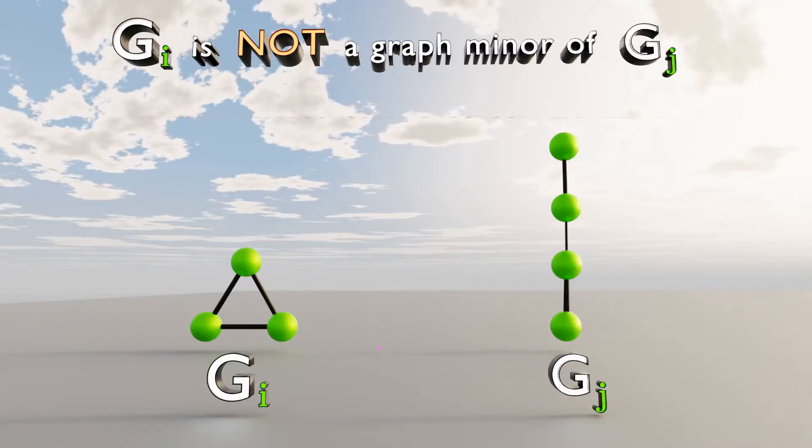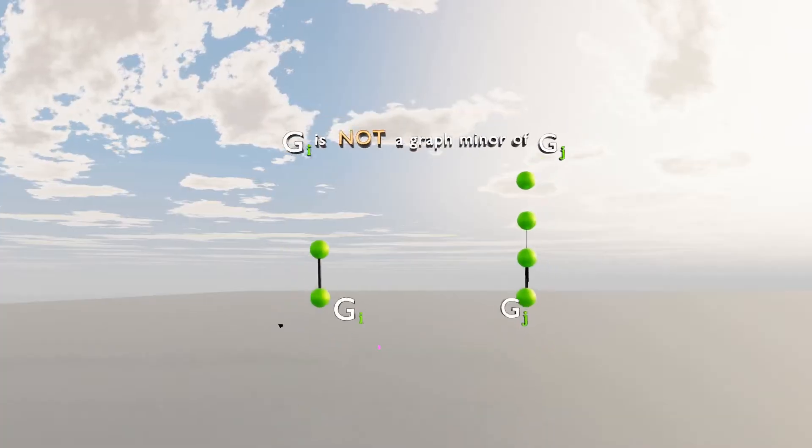Now that we know what a graph minor is, let's get back to SSCGN.